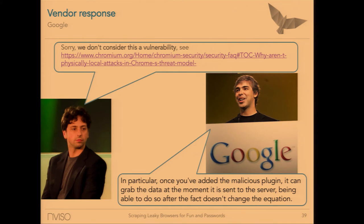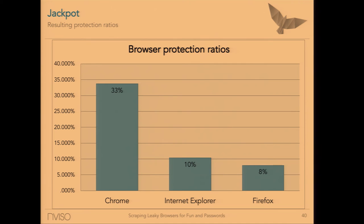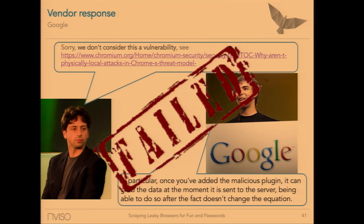We went to Google, submitted a video of us dumping browser memory and showing how many password matches we found. Their response: this is not a vulnerability, it's not our problem. Once you've added a malicious plugin, you could get whatever information you want. But we're not talking about a plugin — we're talking about an external malware reading a leaky browser's memory. They have 33% protection against this, which is awful. There are also several duplicate tickets reporting the same problem, and they all dismissed them. I'd consider this an epic fail. Microsoft agrees it's a problem, so maybe Google should look into it again.